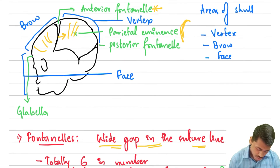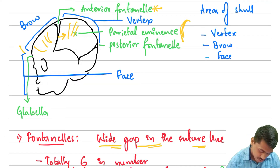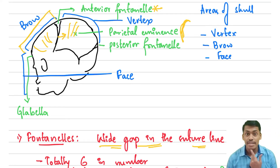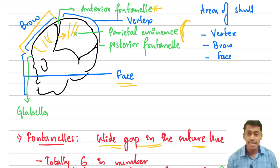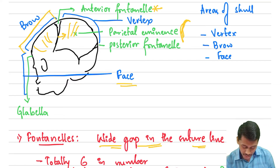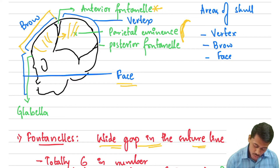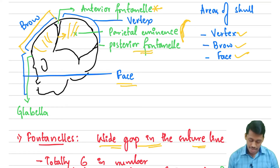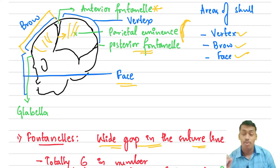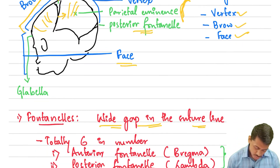From the anterior fontanel all the way up to the glabella, this part is called the brow. From the glabella up to the mental process, this is called the face. Basically three types of presentations we can see in obstetrics: vertex, brow, and face. The vertex is made from the anterior fontanel all the way up to the posterior fontanel. The posterior fontanel is also called the lambda.